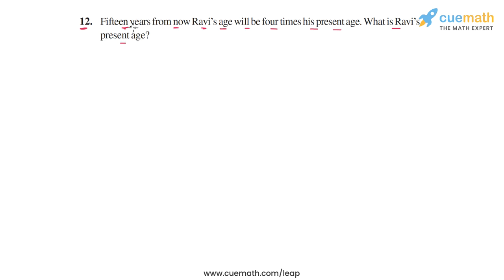The statement says 15 years from now Ravi's age will be four times his present age. What is Ravi's present age? The unknown is Ravi's present age, so let's start by assuming that to be some variable.